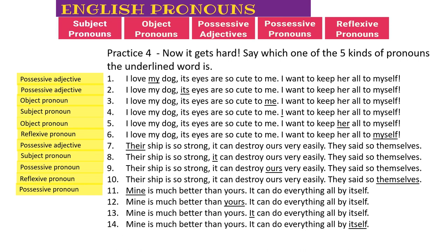Number ten: reflexive pronoun - it's got 'selves' on it. Number eleven: 'mine' will always be a possessive pronoun. Number twelve: 'yours' will also always be a possessive pronoun. Number thirteen: subject pronoun - it's doing the action. Number fourteen: reflexive pronoun - it's got that 'self'. I hope this explained everything. This is something you have to practice - memorize some of them, and practice the rules to get used to all these pronouns. Thank you.